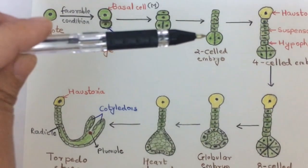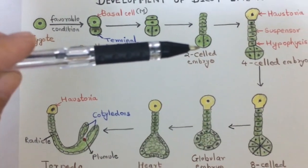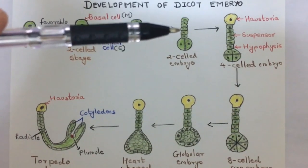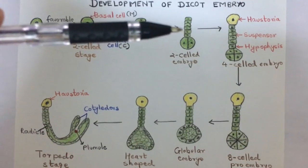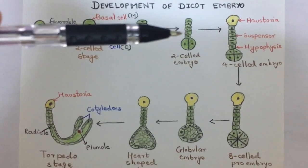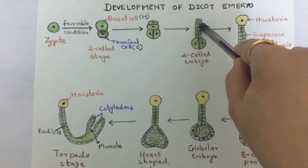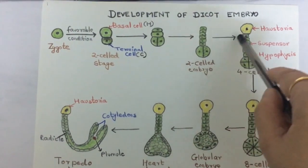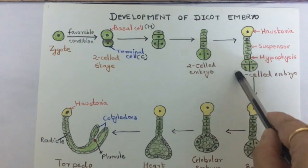The terminal cell remains the same while the basal cell undergoes several longitudinal divisions and forms seven to ten cells. These seven to ten cells are called suspensor cells, forming the suspensor. This suspensor along with the two-cell embryo further divides.